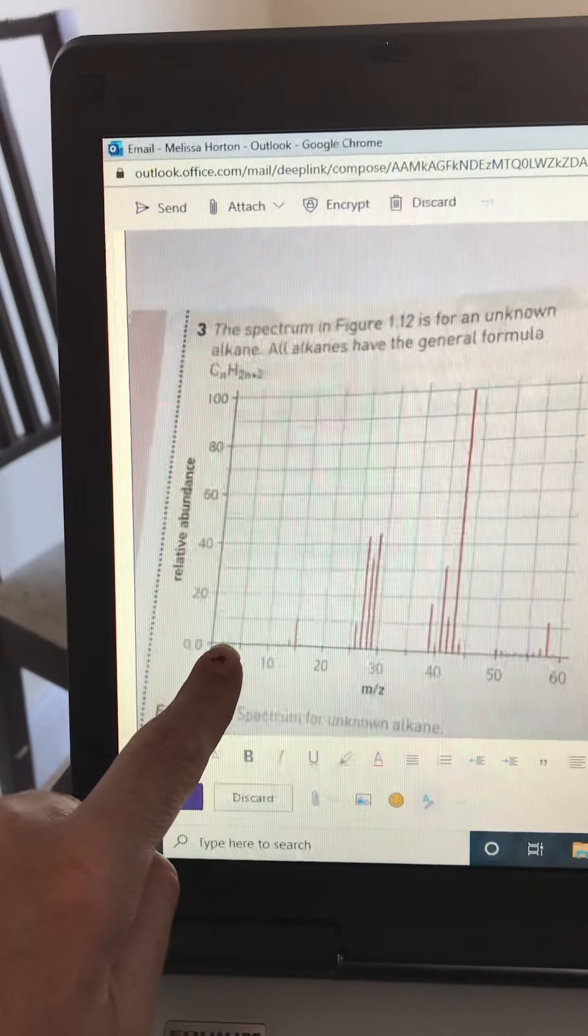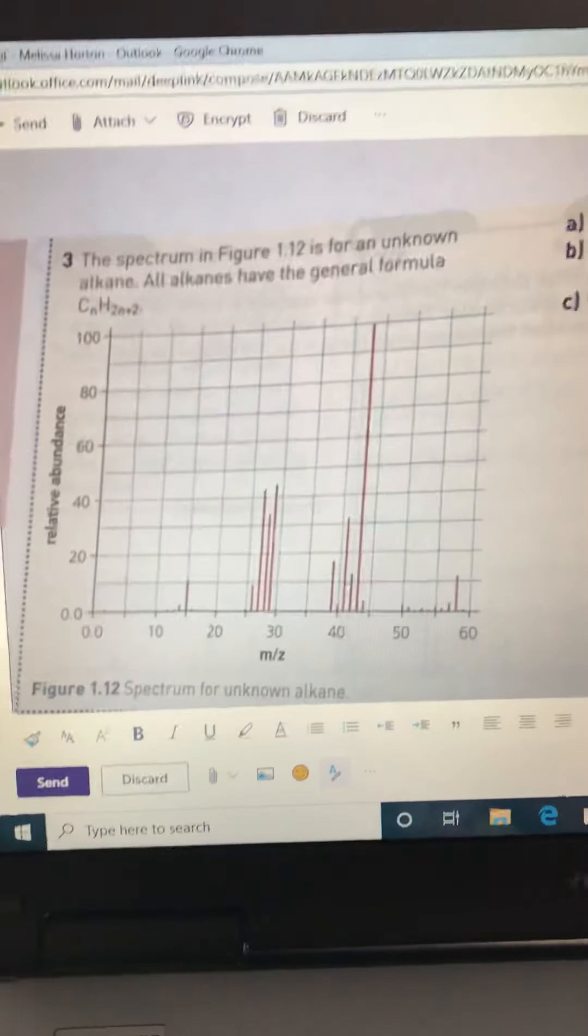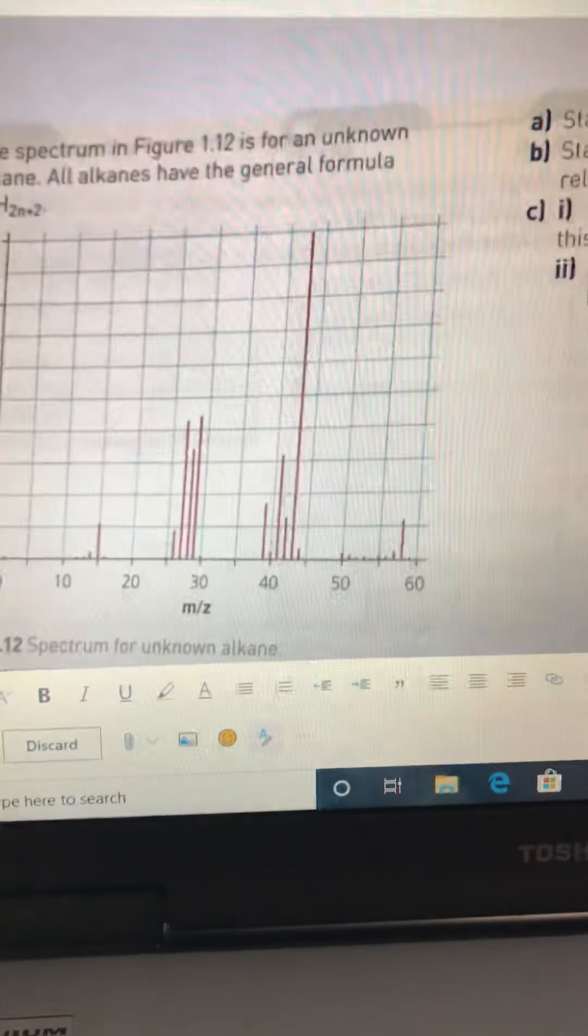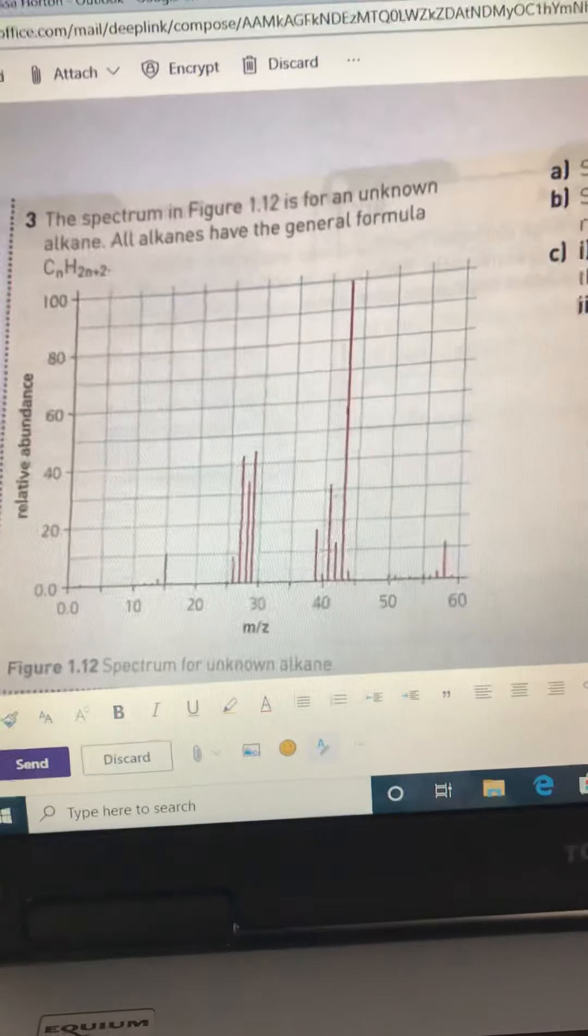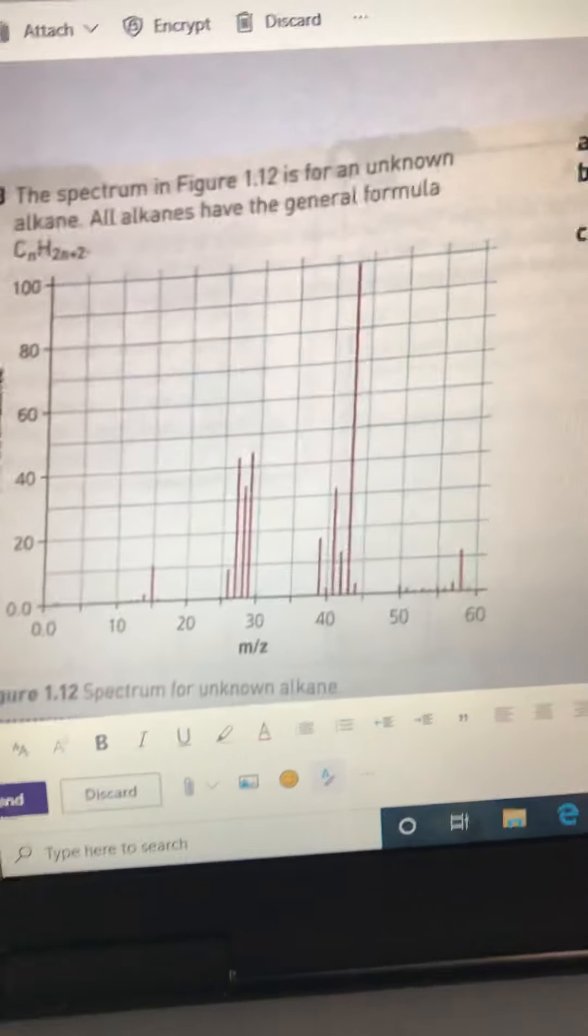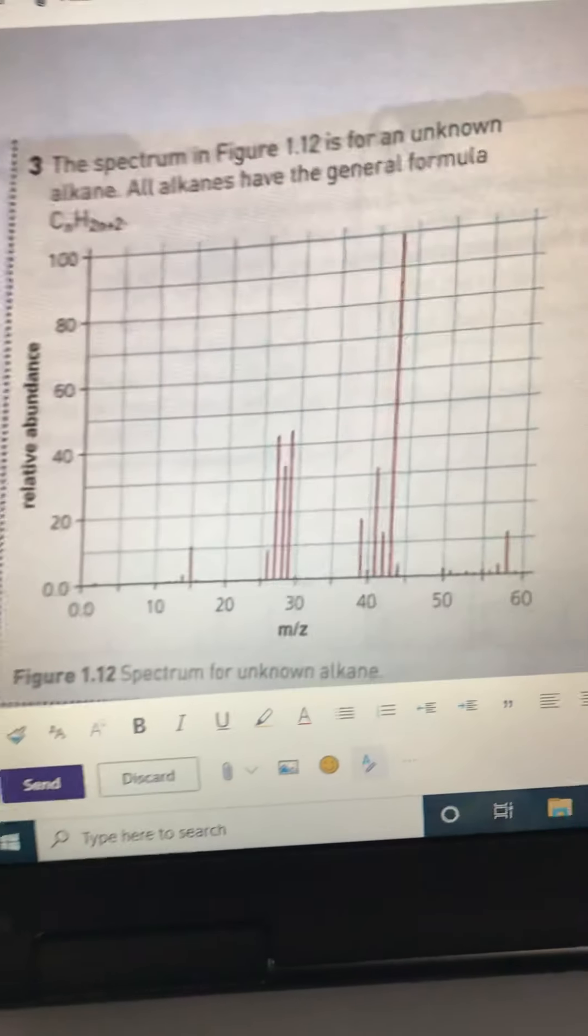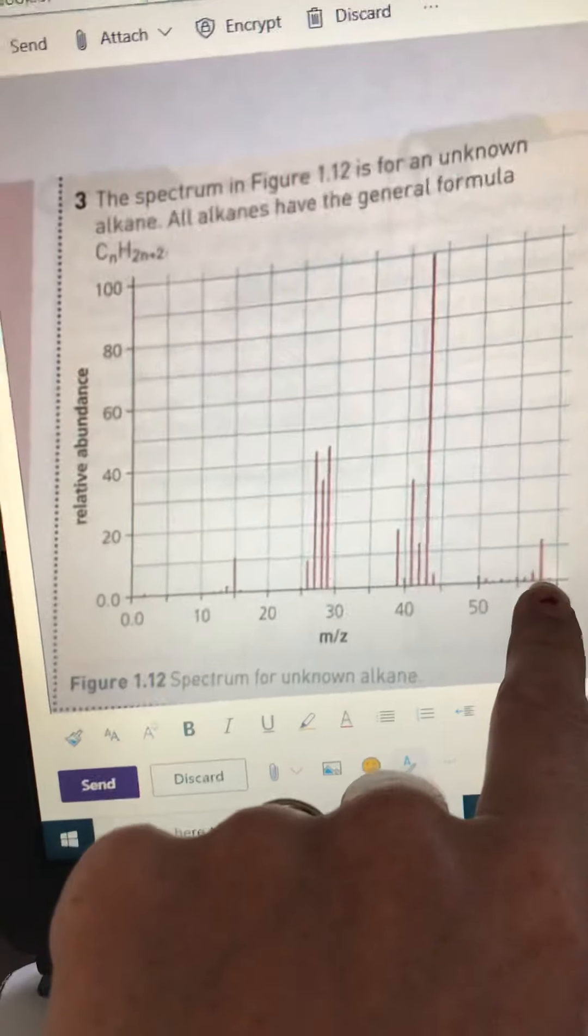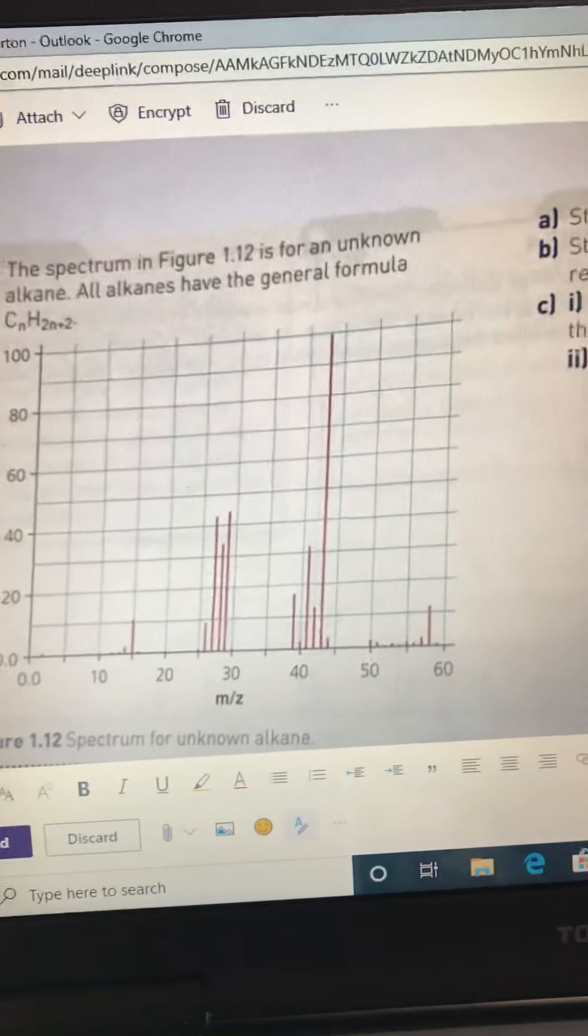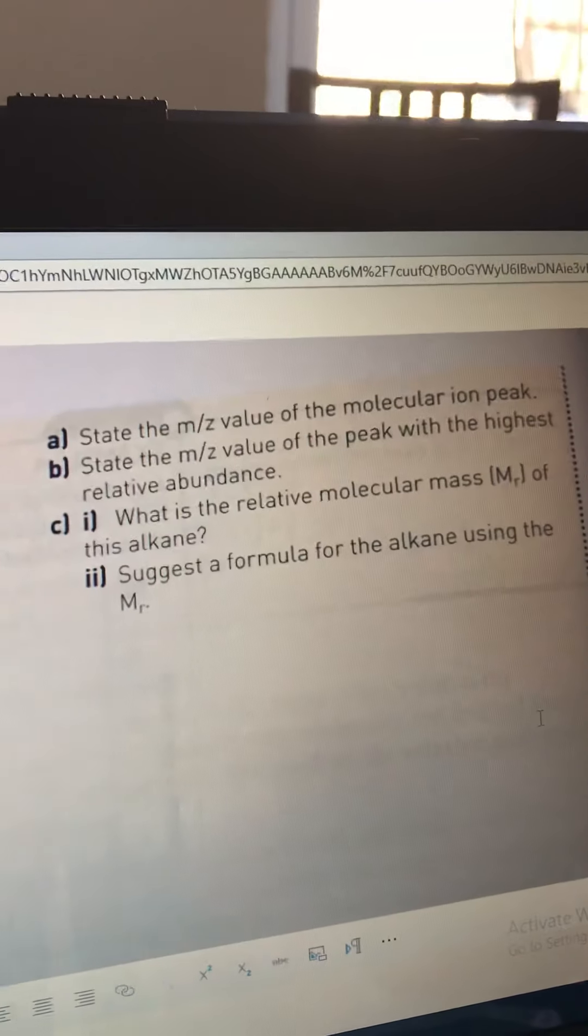We disregard those. They are caused by something called fragmentation - please don't worry about that yet. So this question is a little bit tricky because the scale's slightly open to interpretation, but I would say probably that peak is at 58, an m/z value of 58.